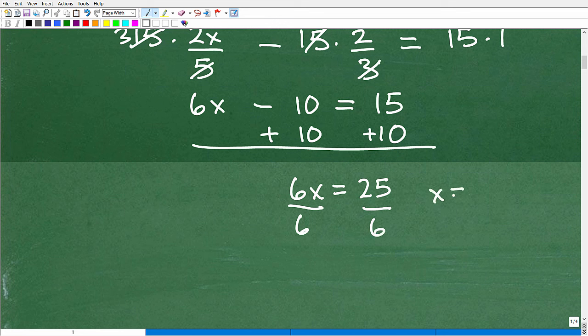So, x is equal to 25 over 6. And if you've been following me for quite some time, I always suggest that you do not turn your improper fractions into a mixed number. Just make sure they're fully simplified unless your teacher or test or quiz explicitly tells you to do so. Okay?